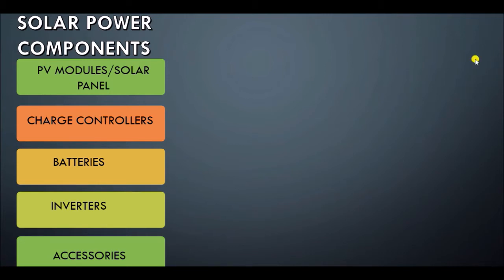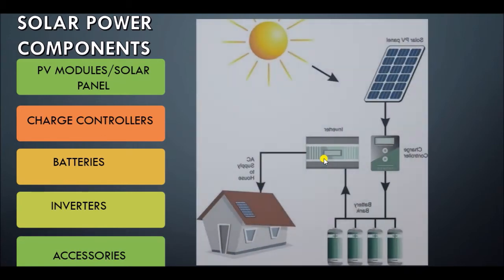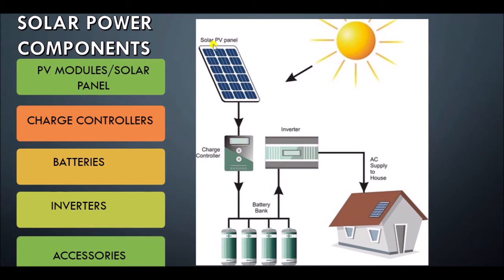To do that, we will need components — we don't just convert it into electricity like magic. These are the components that we need: the PV modules or the solar panel, the charge controller, the battery, the inverter, and the accessories. As you can see from this illustration, we need the charge controller, then storage of the electricity, then the inverter, and then accessories like the cable, the circuit breaker, the trunking and pipes, and the metering system. Once we put all these accessories together, we have the complete solar power system.